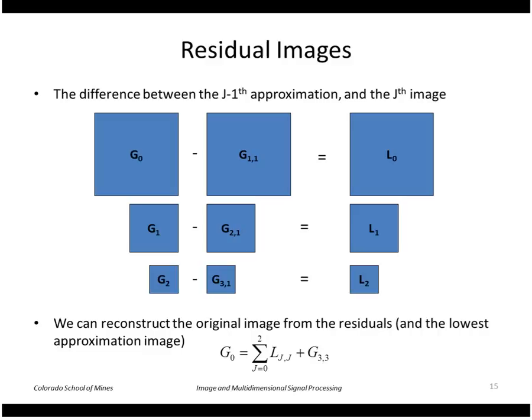So if we take the difference between the Jth level approximation and the original at the Jth level, we get the residual called L sub 0, L sub 1 and so forth. And the interesting thing is if we just add up all of the residuals along with the highest or lowest level approximation image, the smallest one, we'll get back the original that we started with.